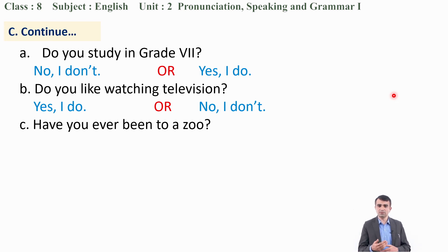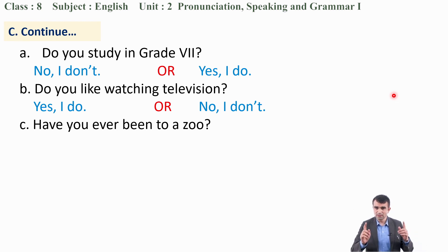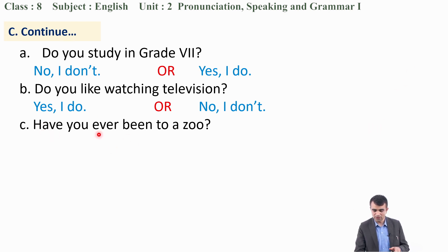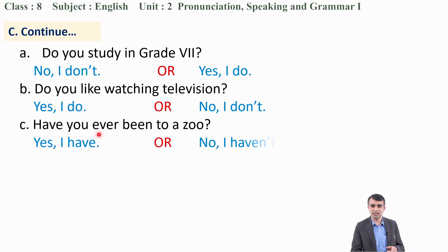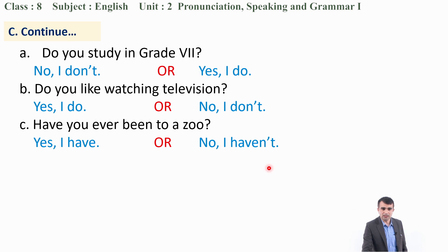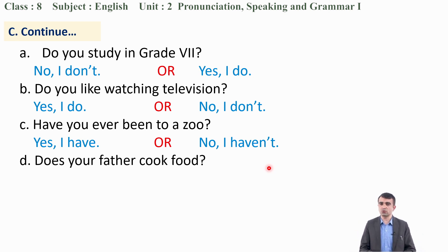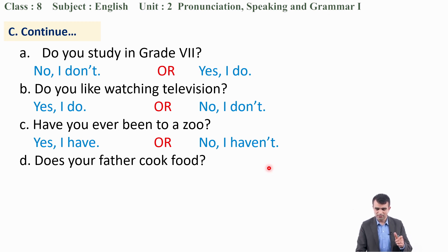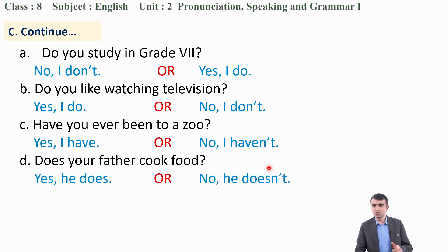Third: 'Have you ever been to a zoo?' Notice the auxiliary verb — you say 'Yes, I have' or 'No, I haven't.' Fourth: 'Does your father cook food?' Answer: 'Yes, he does' or 'No, he doesn't.' Fifth: 'Did you go to a health post or hospital last month?' If you went, say 'Yes, I did.' If not, say 'No, I didn't.'